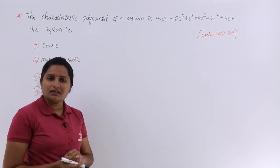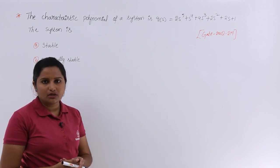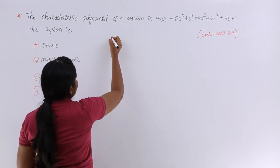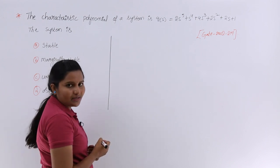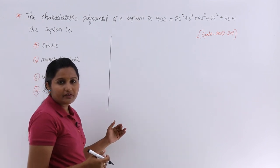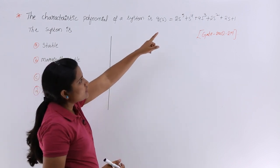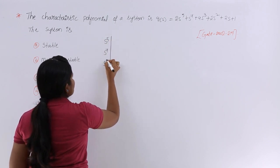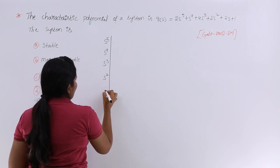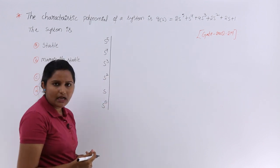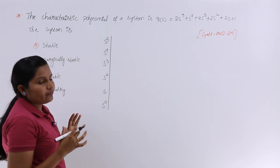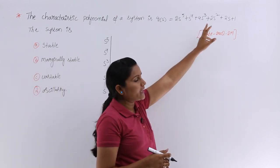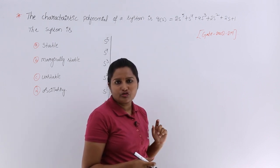Whenever they ask about stability, we need to consider the Routh array. The best way is to consider the Routh array. To write the Routh array, I take a line and from the maximum power of s to the minimum power of s I write in descending order: s^5, s^4, s^3, s^2, s, and s^0. Now, to fill the first two rows of the Routh array, we use the coefficients of the characteristic equation.